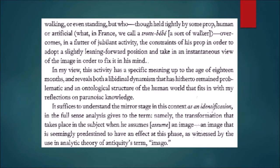This activity reveals both a libidinal dynamism and an ontological structure of the human world. By libidinal dynamism, it is meant that the psyche invests libido in the image of itself along the line of narcissism. By ontological structure of the human world, it means the subject having an image of oneself. The mirror stage in this context is an identification — the transformation that takes place in the subject when he or she assumes an image seemingly predestined to have an effect at this phase, which Lacan calls the Imago.